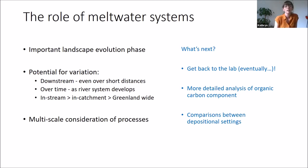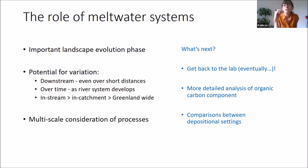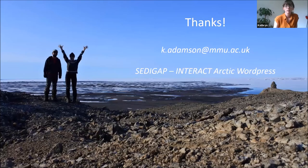This all keys into the idea that we need a process-based approach from multiple different scales — once we get a handle on what is going on with these highly transient forelands, we can understand how they influence other processes in those catchments. In terms of what's next: finally get back to the lab, interrogate the organic carbon content in more detail, and pull out more detailed comparisons between the different depositional settings. Very much a work in progress still.